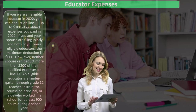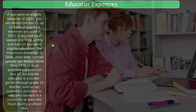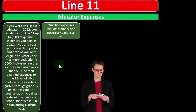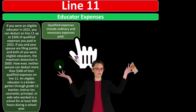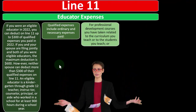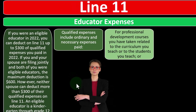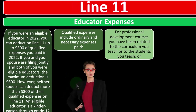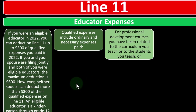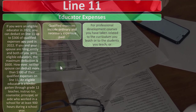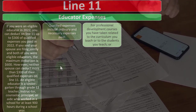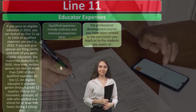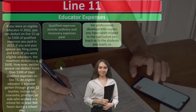An eligible educator is a kindergarten through grade 12 teacher, instructor, counselor, principal, or aide who worked in a school for at least 900 hours during a school year. Qualified expenses include ordinary and necessary expenses paid — the general rule you'd normally expect on a Schedule C type of business. However, if you're a W-2 employee, most people don't get any of those deductions at this point, because it's assumed that as an employee, your employer is taking care of that situation.